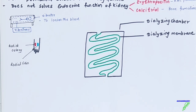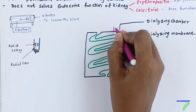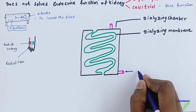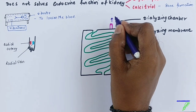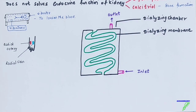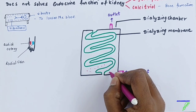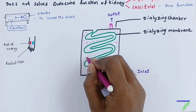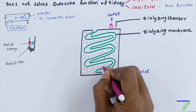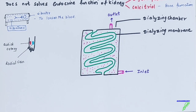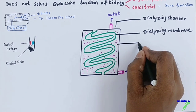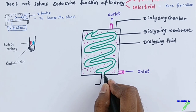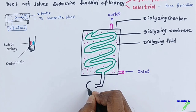The dialyzing chamber has an inlet and an outlet. Dialyzing fluid is introduced through the inlet and removed via the outlet — the inlet is downward and the outlet is upward. The dialyzing fluid enters under pressure and consists of many ions and salts; it transfers those salts into the blood through the dialyzing membrane and removes nitrogenous waste like urea and uric acid.